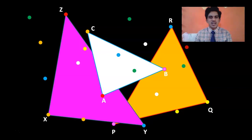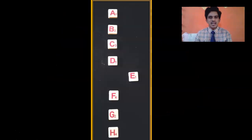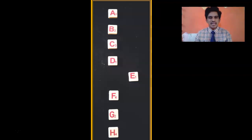You cannot have a triangle by joining collinear points. Whenever you have a triangle, it has some area surrounded by its boundary. Whenever you have a closed figure, it definitely encloses some area. Now observe this: which letter is different from all the remaining? Letter E is different because it is not on the straight line joining all the remaining alphabets.